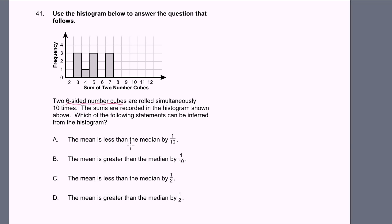The first one says the mean is less than the median by 1 tenth. So they're comparing the mean and the median in every one of these choices. We can actually look at this histogram and figure out all of the results that happened. We got three three times, one four, three fives, no sixes, and three sevens.